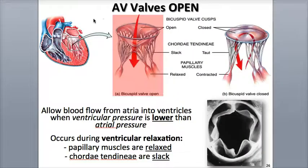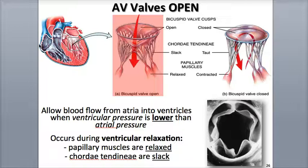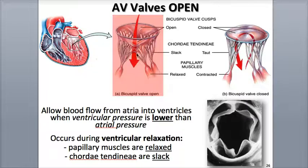The two atrioventricular valves, or AV valves — the tricuspid and the bicuspid — are found between the atria and the ventricles. When the right and left atria contract, the valves open and allow the high-pressure blood to flow into the ventricles, as long as ventricular pressure is lower than atrial pressure.